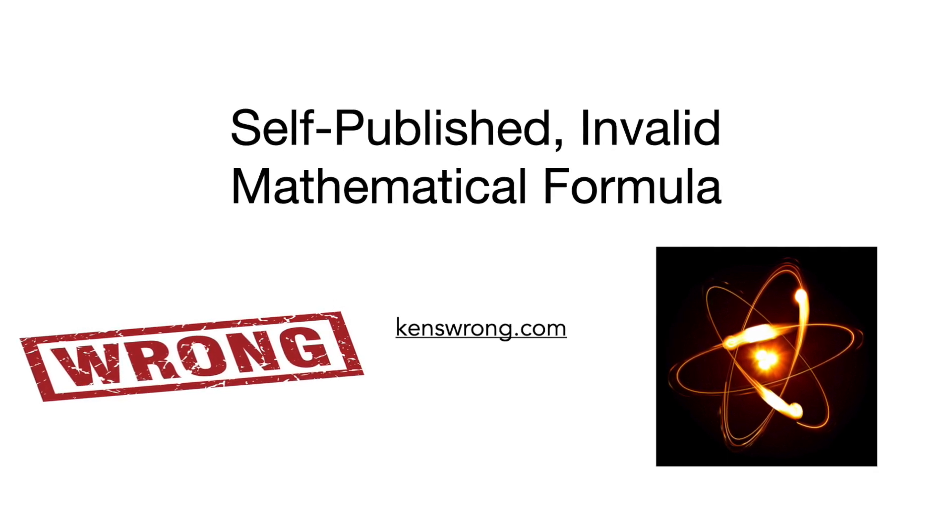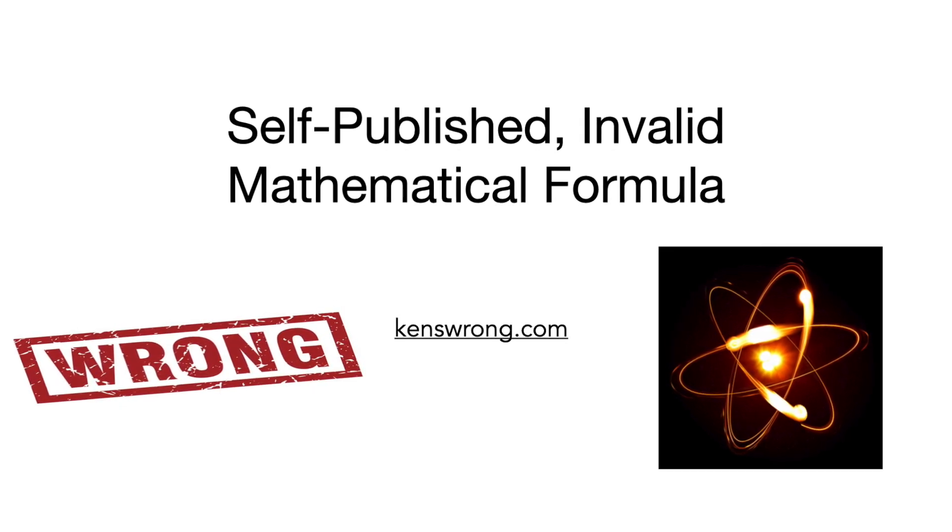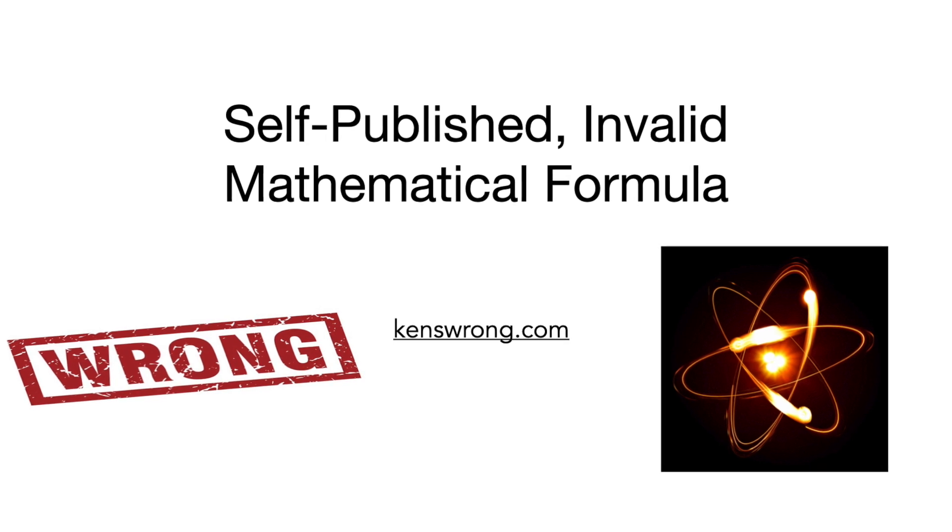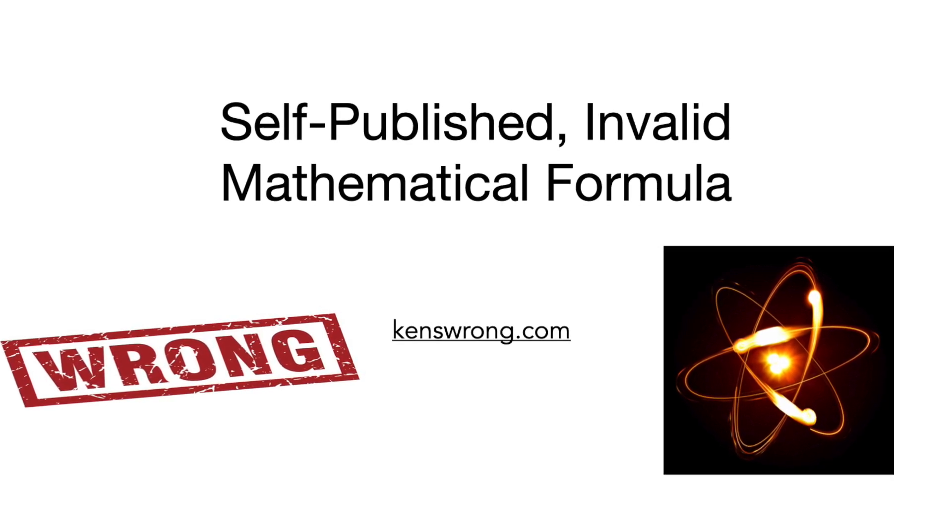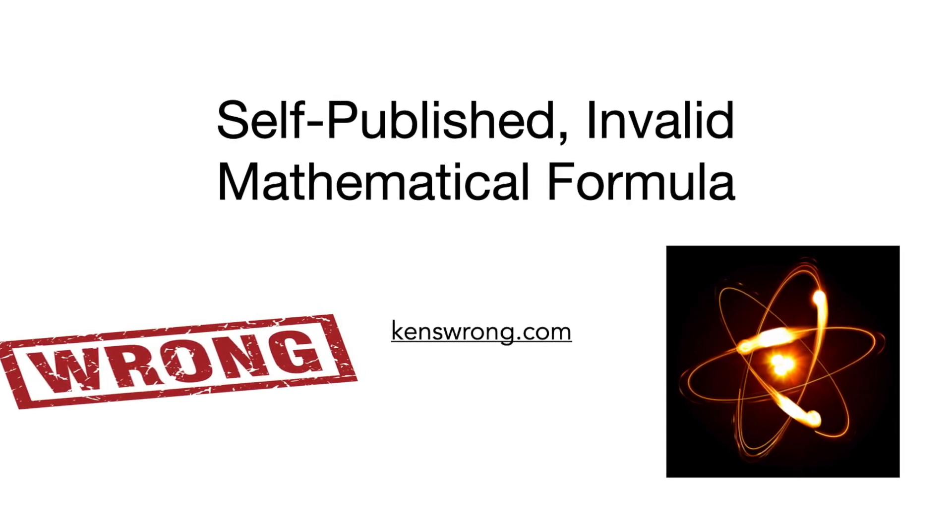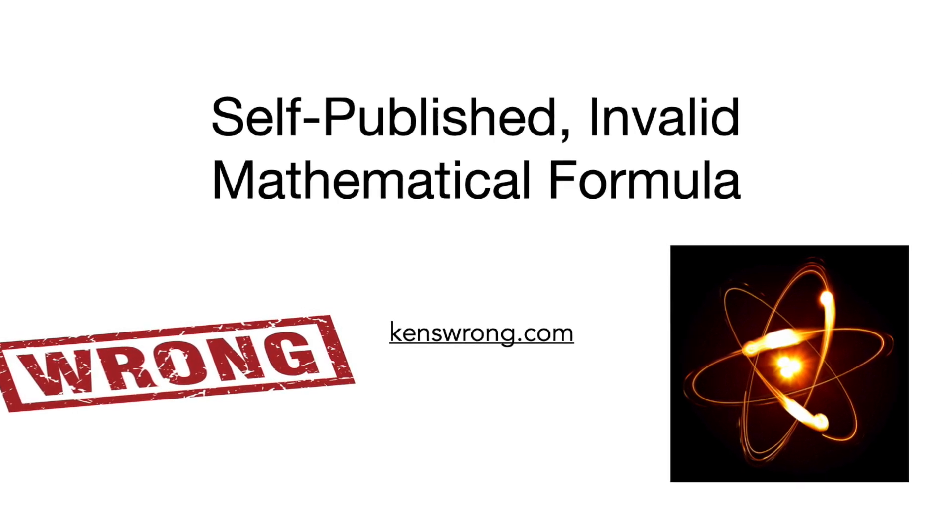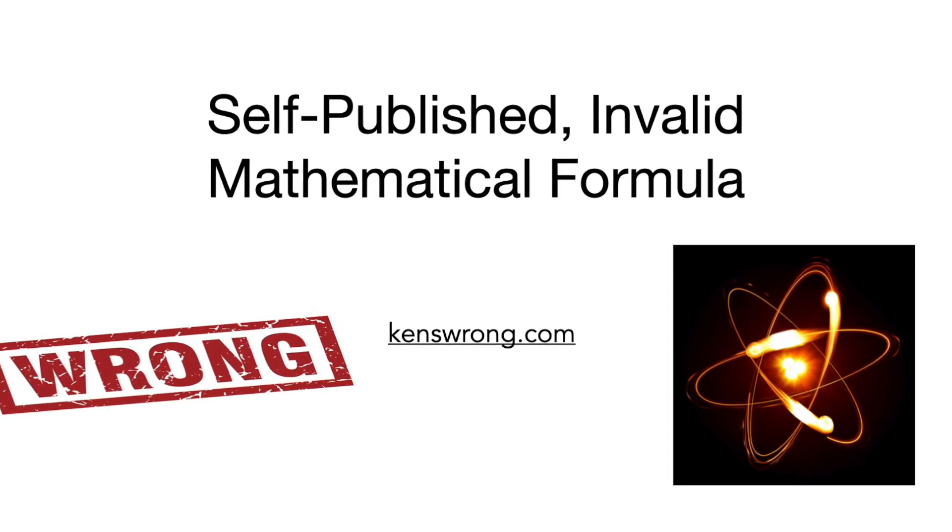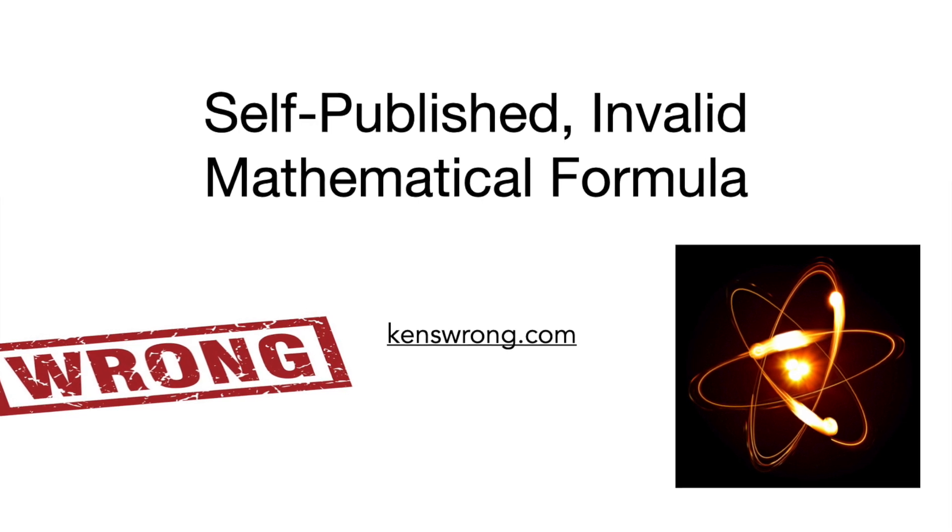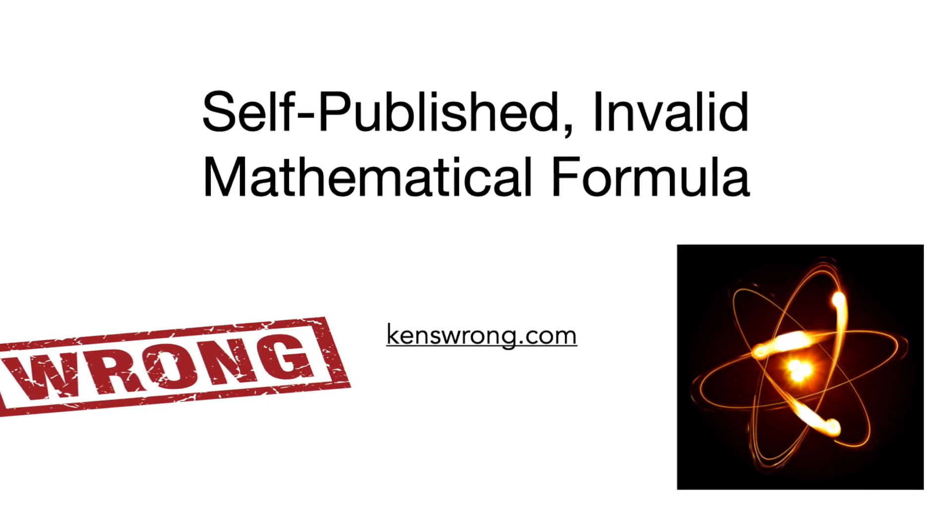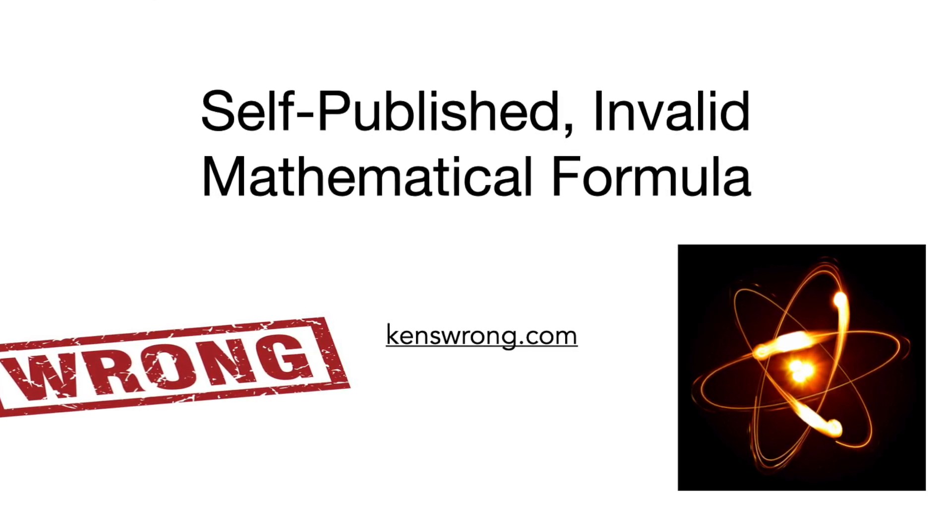light becomes a closed-loop, non-propagating torus that inexplicably uses spherical harmonics to form hydrogen atoms. In support of this notion, the YouTuber behind Theoria Apophasis has self-published a mathematical formula.